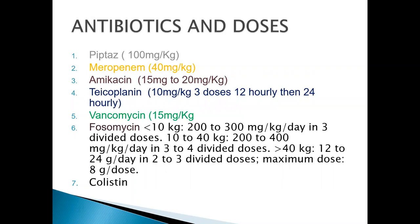Antibiotic doses: piptas 100 mg/kg, meropenem 40 mg/kg, amikacin 15–20 mg/kg, teicoplanin 10 mg/kg in three doses (12-hourly then 24-hourly), vancomycin 15 mg/kg. Fosfomycin: less than 10 kg — 200–300 mg/kg/day in three divided doses; 10–40 kg — 200–400 mg/kg/day in three to four divided doses; more than 40 kg — 12–24 g/day in two to three divided doses, maximum dose 8 g. Colistin is also used.